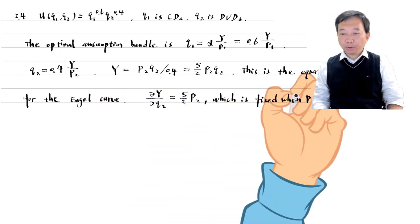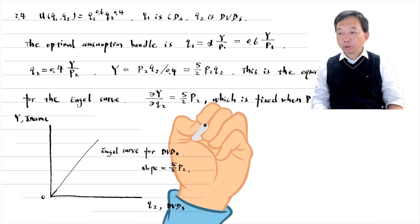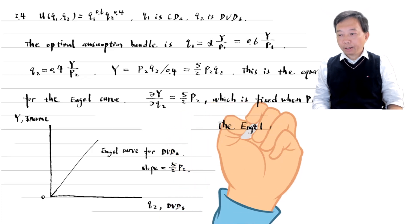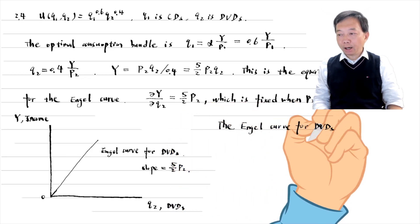In the Engel curve diagram, the horizontal axis measures the quantity of DVDs and the vertical axis measures the income. The slope of the Engel curve is 2.5 times P2, which is fixed when P2 is given. So the Engel curve is an upward sloping straight line.